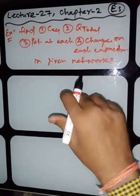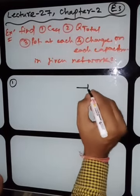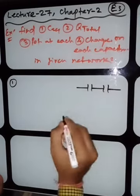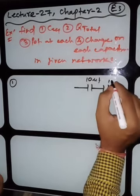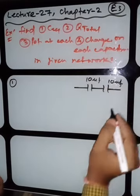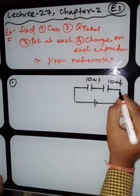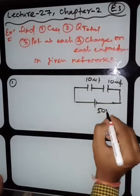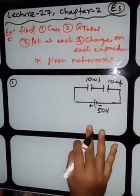A very simple network we are taking today — all students will be able to understand this one. The first question has two capacitors: suppose it is 10 microfarad and this is also 10 microfarad, connected to a 50 volt supply. Now the question is very simple — you have to find these four quantities.